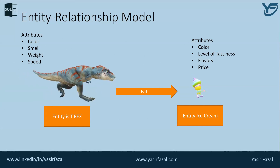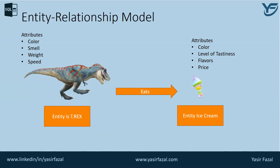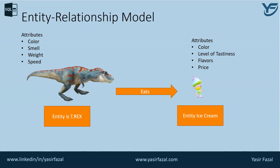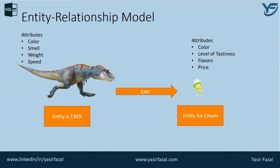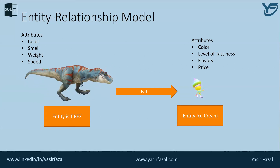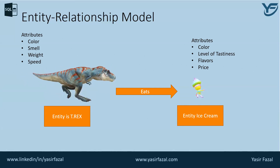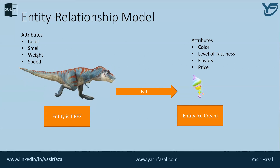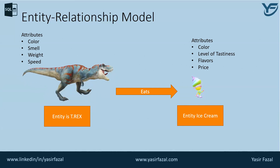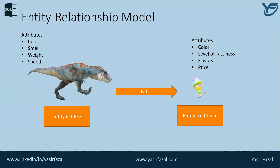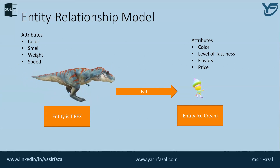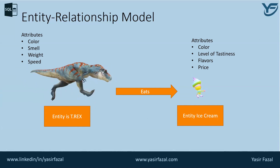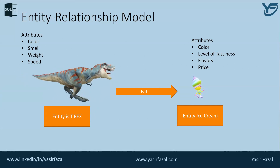For example, when creating a school database, there will be students, and students are considered as an entity. Students have various attributes like name, age, class, etc. Similarly, the T-Rex entity has various attributes as elaborated earlier.